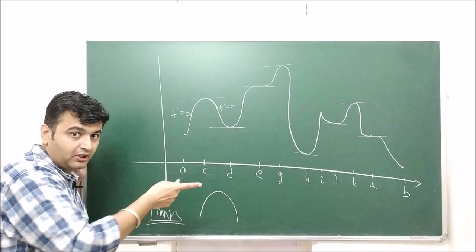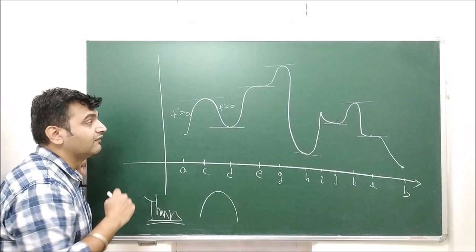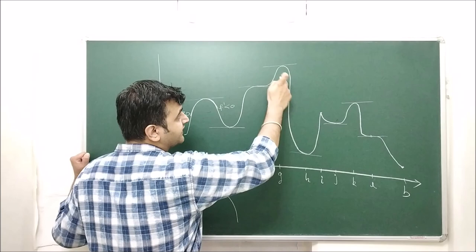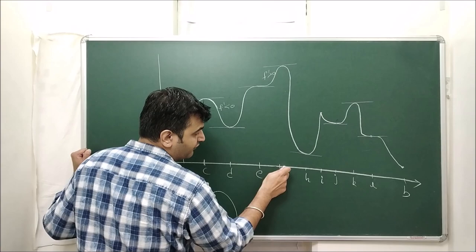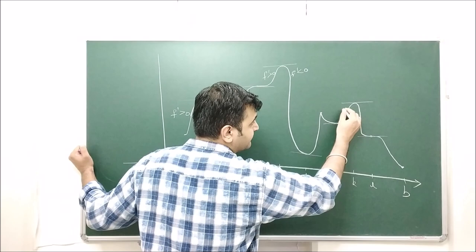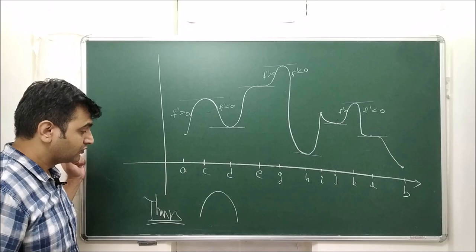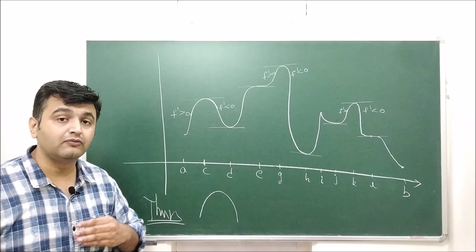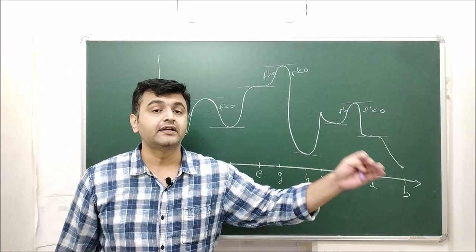If f′ is changing sign from positive to negative, you will have local maxima. You can see this at another point as well — the function is increasing on one side (derivative positive) and decreasing on the other (derivative negative). The same thing works at point K: derivative is positive before, negative after. So the first statement of the theorem is: if f′ changes sign from positive to negative at a critical point, you have a local maximum value there.